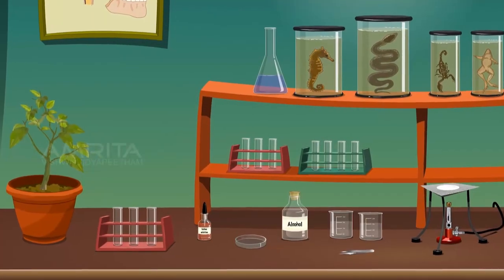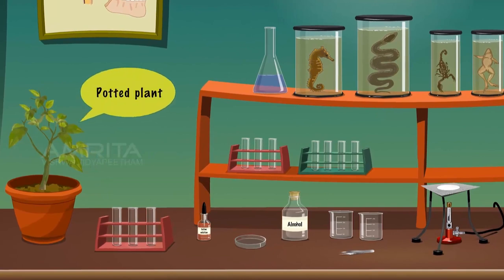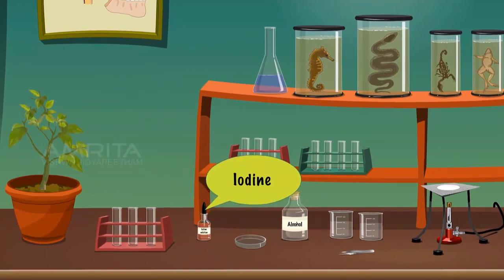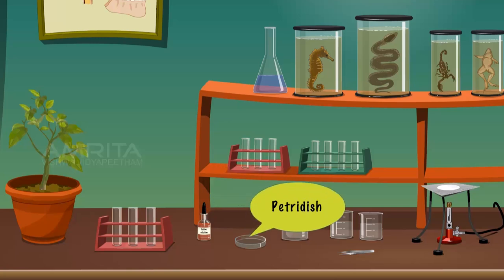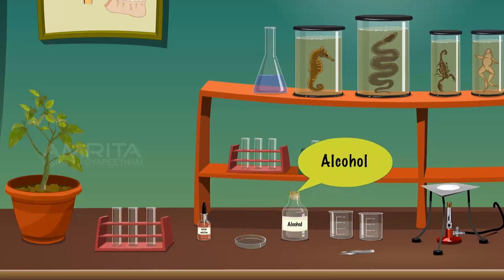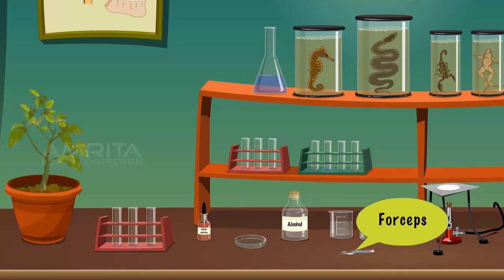To do the experiment we require a potted plant, boiling tube, iodine, petri dish, methylated spirit or alcohol, distilled water, forceps, and Bunsen burner.